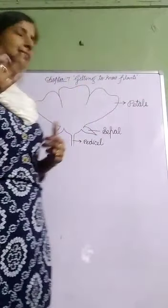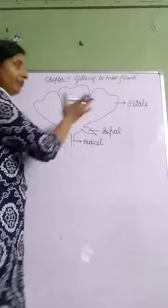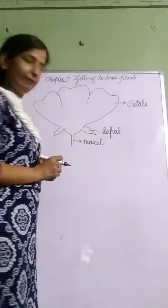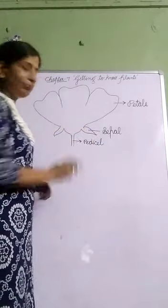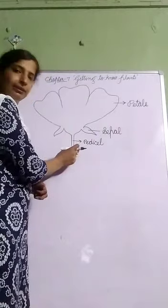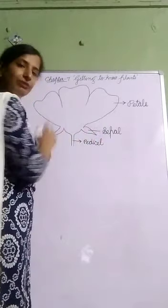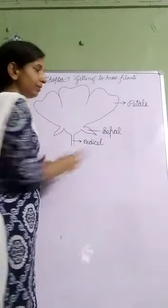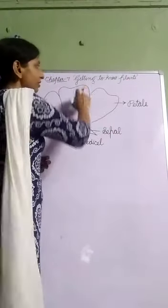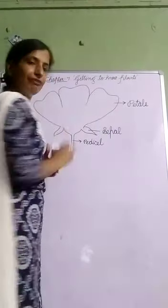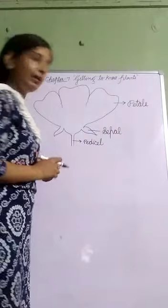Petals attract insects for pollination. We will discuss further what pollination is, but before that let us learn about the parts of the flower. The stalk of a flower is called pedicel. Green leaves on the flower are called sepals. And colorful leaves of a flower are called petals.